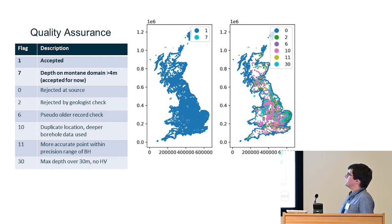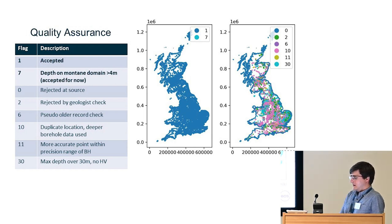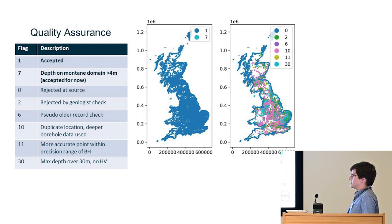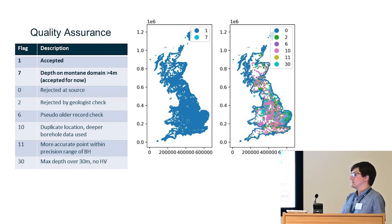There are still regions with very sparse data points, for example in the Highlands of Scotland, some parts of the southwest, and parts of Wales. However, we have used some new rules in this quality assurance step to try and accept more boreholes. Using a new hidden valley product from BGS, we have said that if a borehole is deeper than 30 metres and there are hidden valleys, it can now be accepted into the dataset, whereas previously it may have been rejected until checked by a geologist.